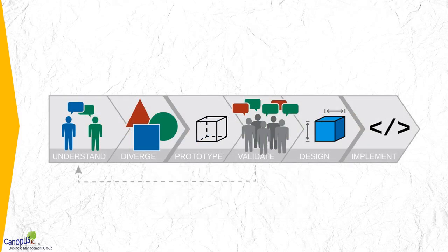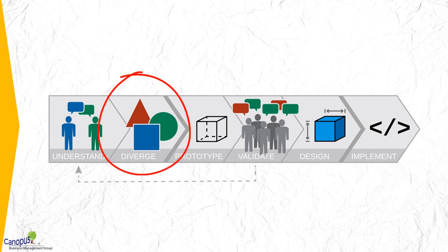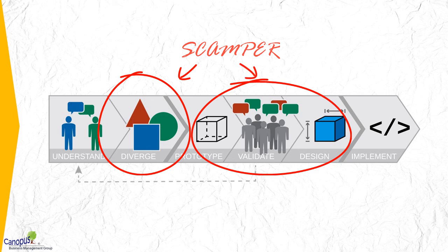Talking about the product development cycle, which is very similar in some form or the other, we start by understanding the customers, and that gives us some idea of what the real concerns of customers are. Then we start ideating for various solutions. Once we have done the ideation using SCAMPER, we move on to the next phase where we pilot the solutions. Even at the stage of piloting, to refine the solutions, we may need to apply SCAMPER, and then we go and implement it. That is the broad cycle of product development.